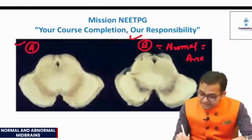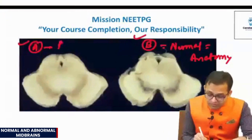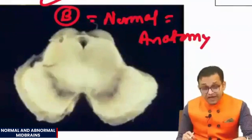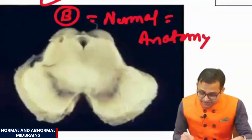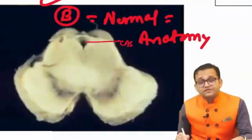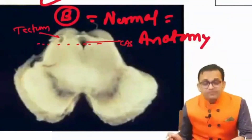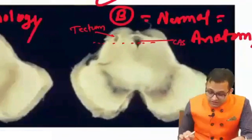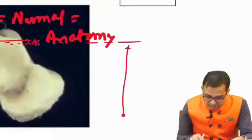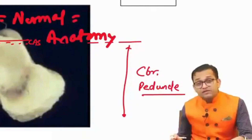Normal means yes, it is anatomy. And A is abnormal — abnormal means pathology. This is the beautiful integration between the anatomy and the pathology. This is the cerebral aqueduct of Silvius. One imaginary line is drawn from here. Behind it, this is the tectum. Ventral to this imaginary line is one big structure known as the cerebral peduncle.